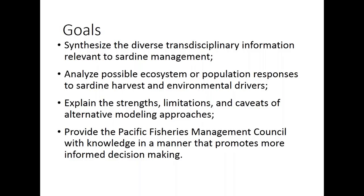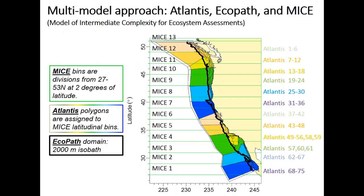The ultimate goal is to provide the Fishery Council with information about these species and about forage fish impacts on predators. We had a recent briefing in October of the Coastal Pelagic Species Management Team about this work. I'm going to talk about three models: the Atlantis model, the Ecopath model, and the MICE — model of intermediate complexity for ecosystem assessments — which is a stripped-down multi-species model. The spatial domain for those models varies, with MICE using 13 spatial bins and Atlantis using irregularly shaped spatially detailed polygons.